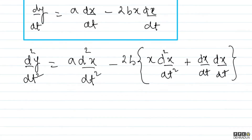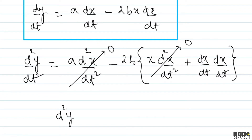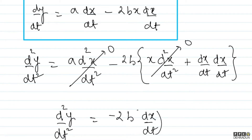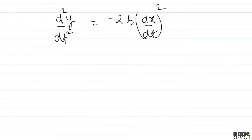Now, we are given that the acceleration is only along the y-axis, not along the x-axis. So the x-component of acceleration is zero — that term becomes 0, and the other term also becomes 0. So we get: d²y/dt² = -2b·(dx/dt)².